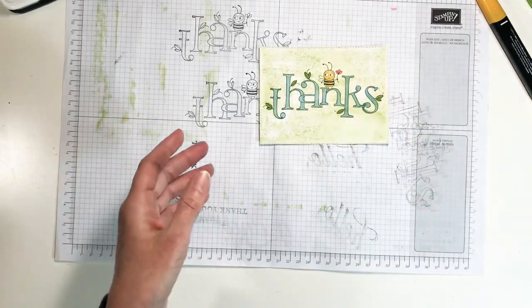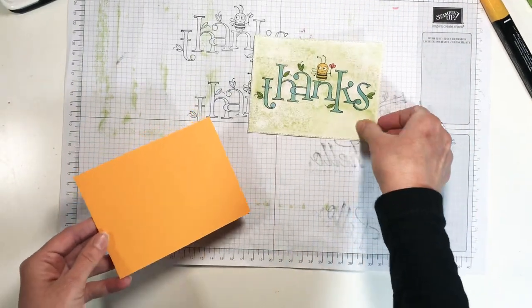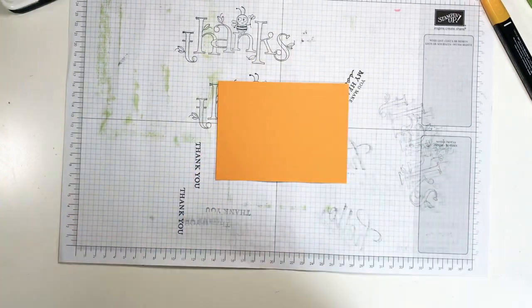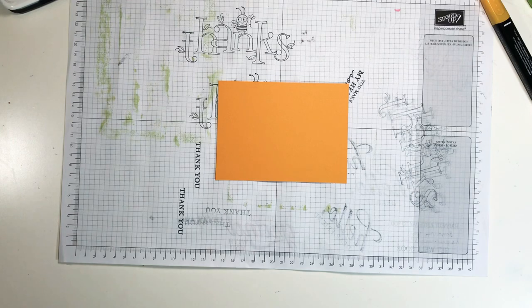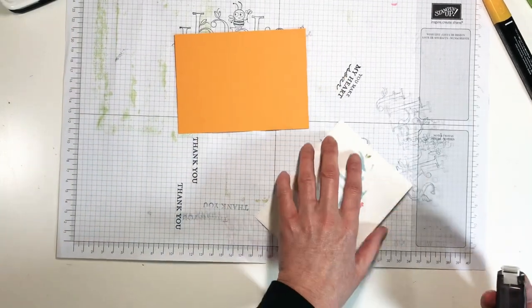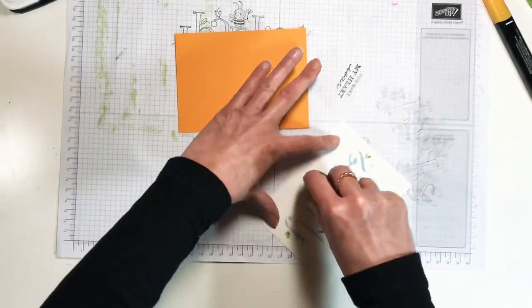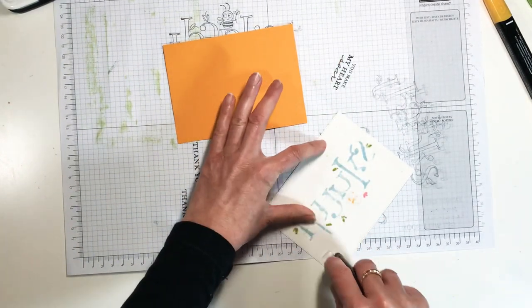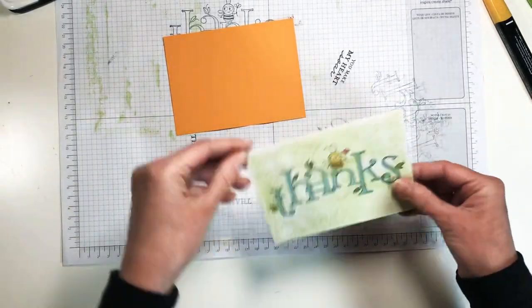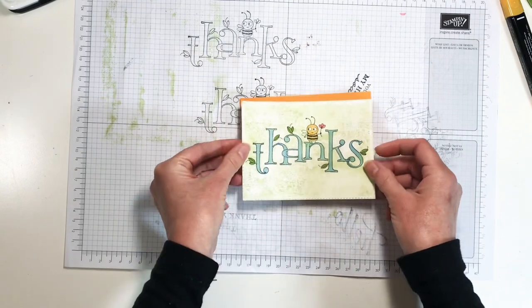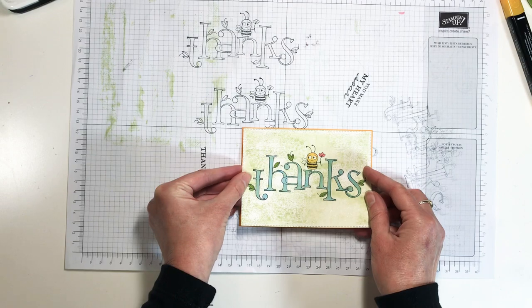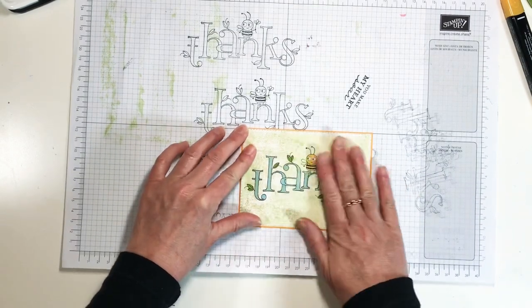That looks so much better by adding the color. All right. Then I have a piece of Mango Melody and this just has a very small eighth of an inch, so really a sixteenth all the way around. And I do have fast fuse this morning. I can't find my snail so I grabbed my old fast fuse. Just a sixteenth all the way around. So just be careful there.